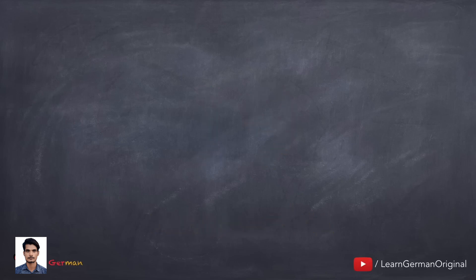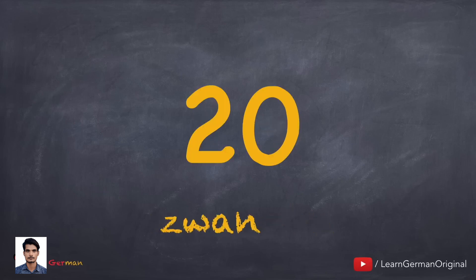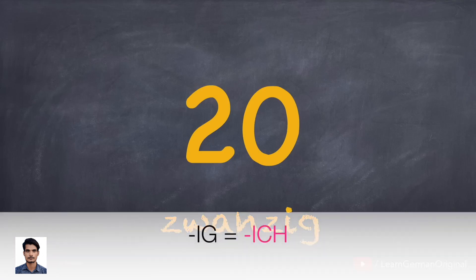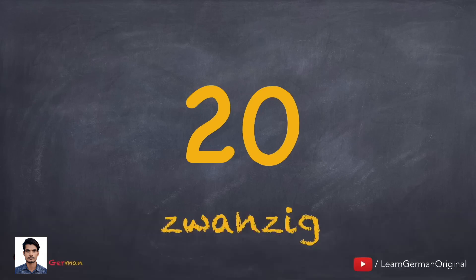And now we come to the final number: Zwanzig. When G forms part of an -IG suffix, it is pronounced as -ICH. You might also find some people pronouncing this as Zwanzig — this is because they have a different dialect.